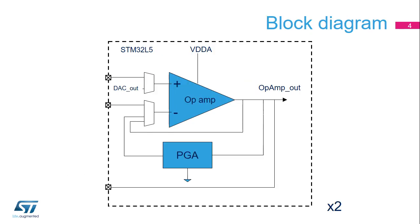This slide shows the block diagram of the operational amplifiers. The STM32L5 integrates two operational amplifiers. Several switches are used to configure different functions, and each op-amp can be configured individually.